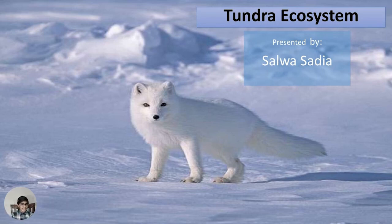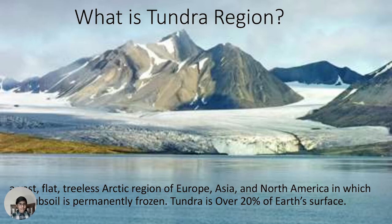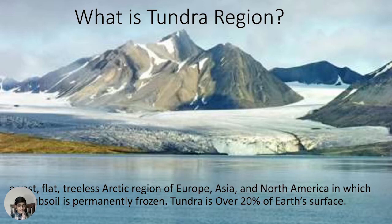Hi everybody, this is Ala Saadia. Today is the fifth episode of the ecosystem series, and we are going to discuss the tundra ecosystem. What is tundra? Tundra is a vast, flat, treeless Arctic region of Europe, Asia, and North America in which the subsoil is permanently frozen. Tundra covers over 20 percent of the Earth's surface.